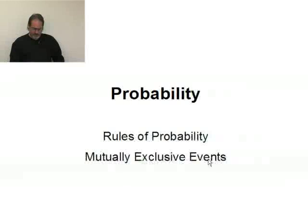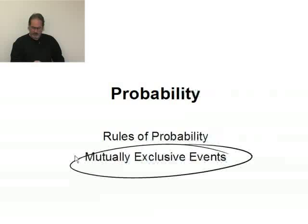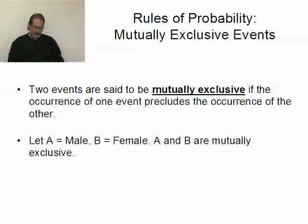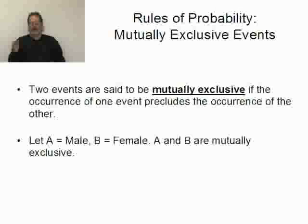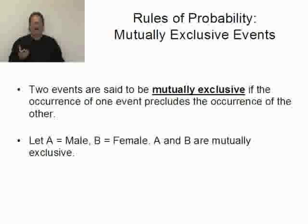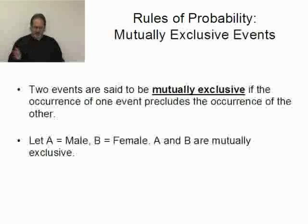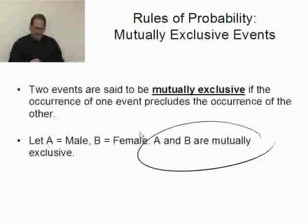Let's now talk about the idea of mutually exclusive events. Two events are said to be mutually exclusive if the occurrence of one precludes the occurrence of the other. That means if one happens, the other cannot. As an example, let event A be somebody's a male, event B be somebody's a female. Without messing around with Mother Nature, A and B are mutually exclusive.